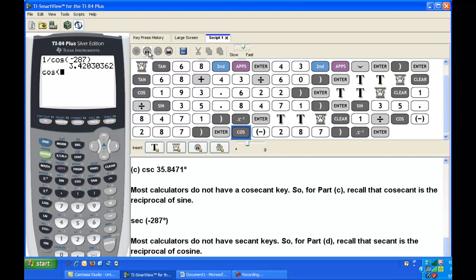And again, an alternative way to find the secant would be to first find the cosine of negative 287, and then after you've done so, hit the x to the minus 1 key, which will take the reciprocal of the result. Make sure that you don't hit that key until after the right parenthesis.